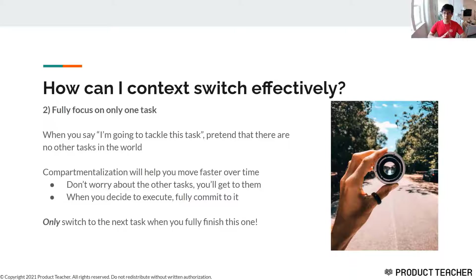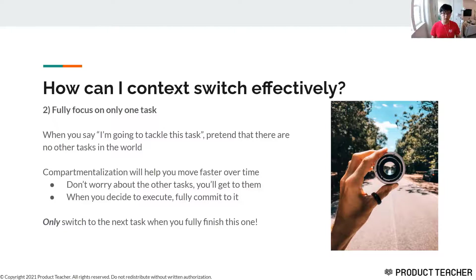The second part is that when you decide you're going to do a task, pretend there's nothing else in the world you could possibly be doing — because compartmentalizing will help you move faster. Once you say this is the thing I'm doing, don't worry about all the other things you could be doing, because that will slow your brain down, give you too much mental overhead, and reduce your ability to execute. Don't switch to the next task until you finish this one — just focus on the one thing and don't worry about the rest of your backlog.